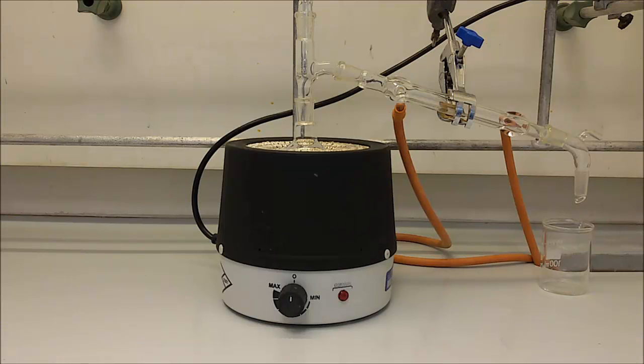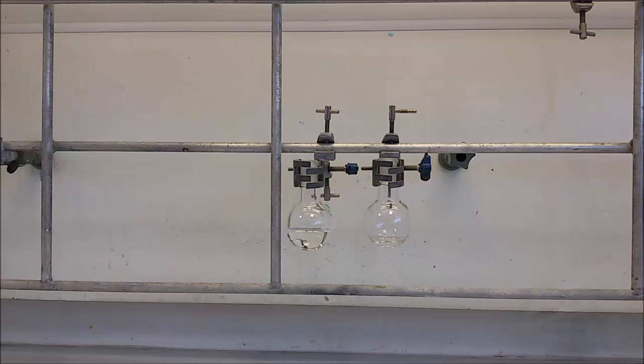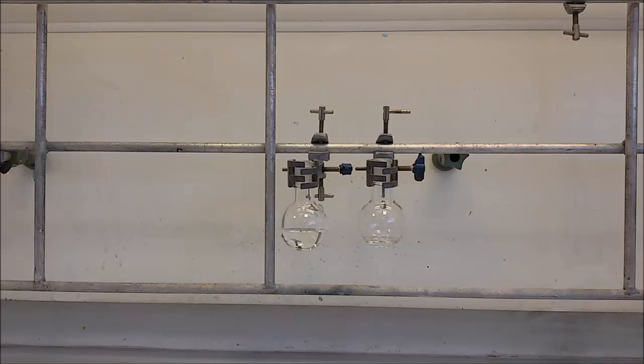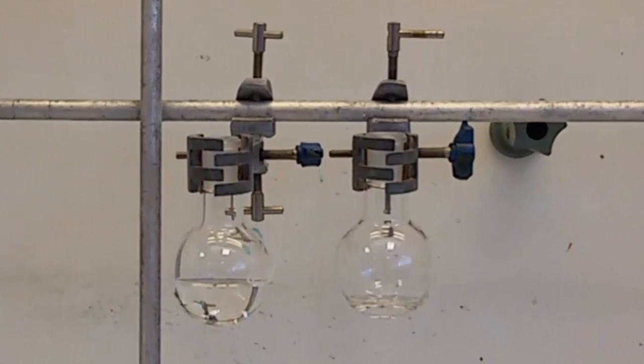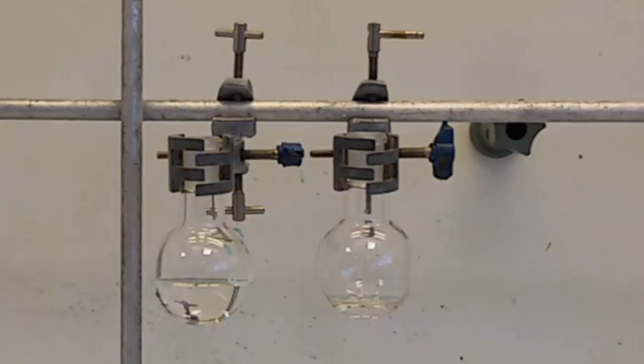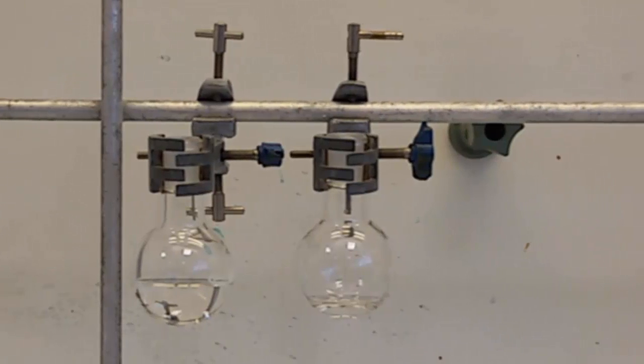When you switch the heating off, allow the whole setup to cool to room temperature and then switch off the water. To give you an idea of how much to leave in the flask, the left-hand side flask is the initial 20 ml of liquid and the right-hand side one is the amount to leave.